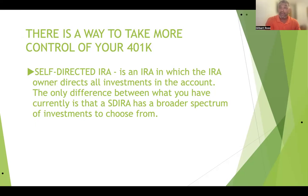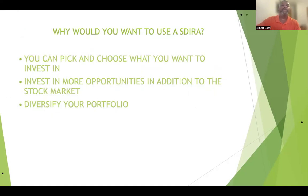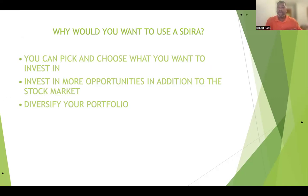We've come through a really good cycle with the stock market, so maybe that's where you wanted your money for that particular time. But there are instances where maybe you want to take the money out of the stock market because it's not performing like it once was, and put it in another opportunity you know about. With the self-directed IRA, you have that flexibility. You can pick and choose what you want to invest in — you can invest in more opportunities in addition to the stock market.